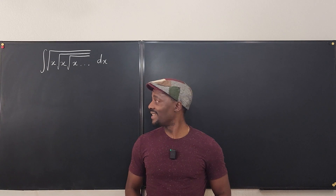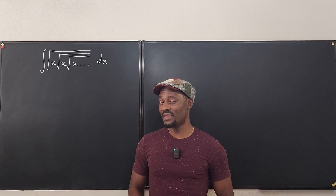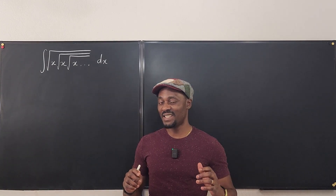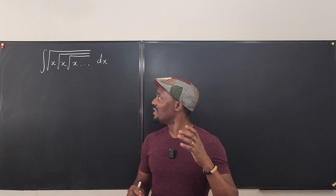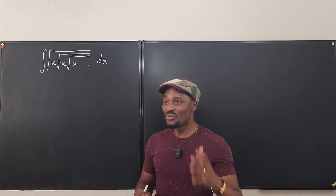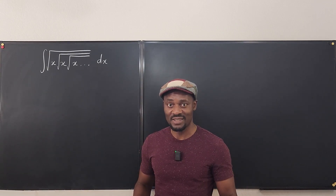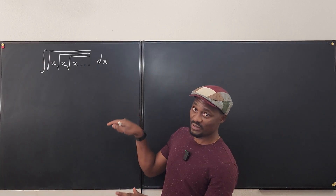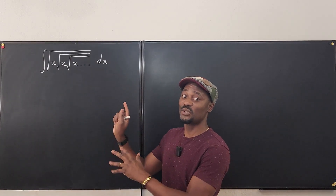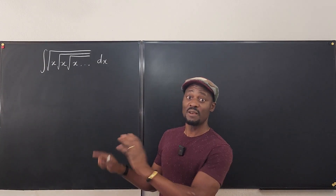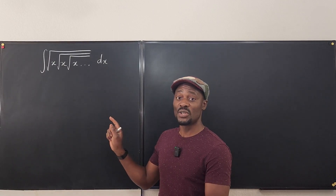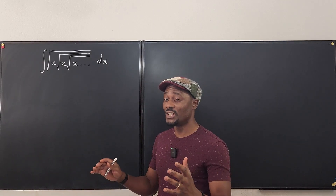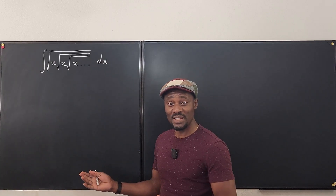Welcome to another video. Let's take this integral. This is a nested radical of x — the square root of x times the square root of x times the square root of x, times the square root of x times the square root of x, and it goes on forever. And we're supposed to take the integral of this.